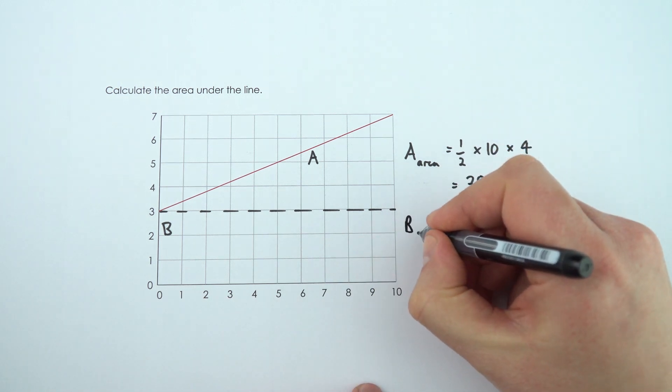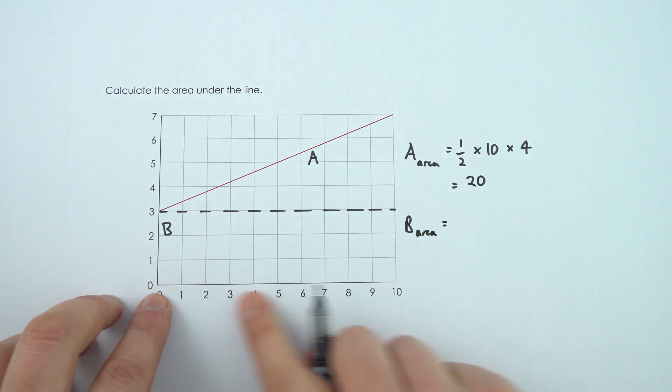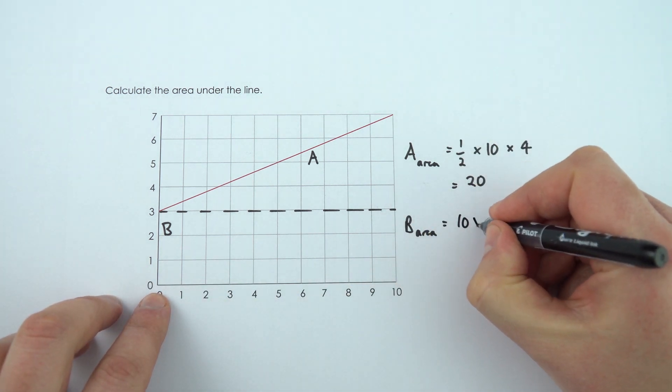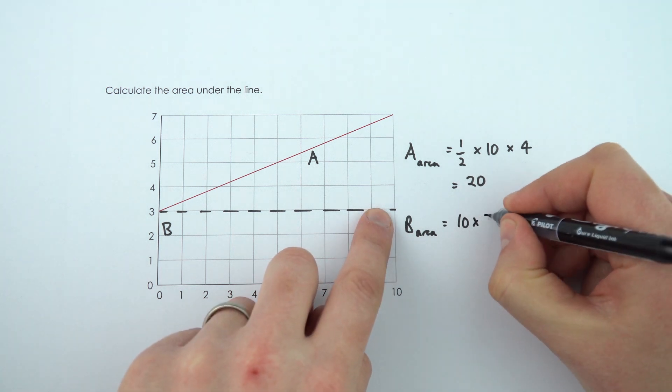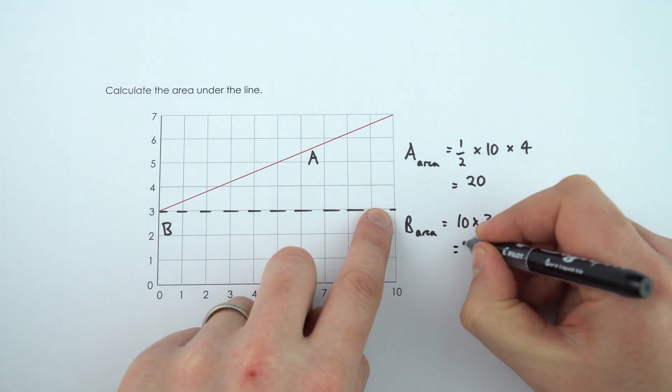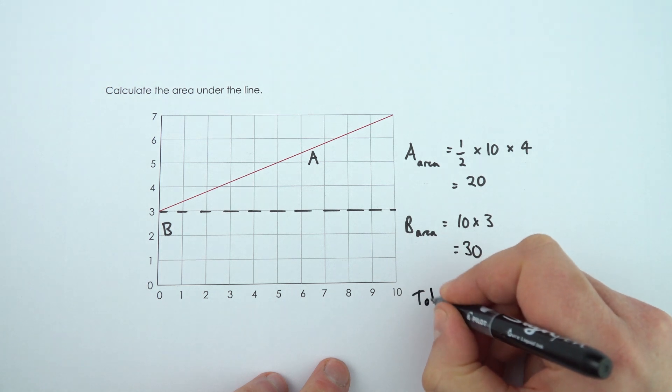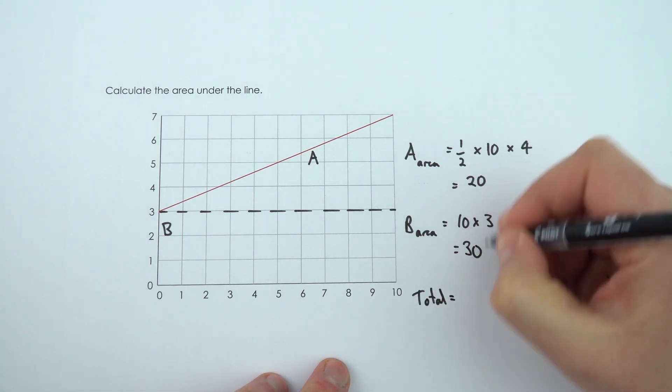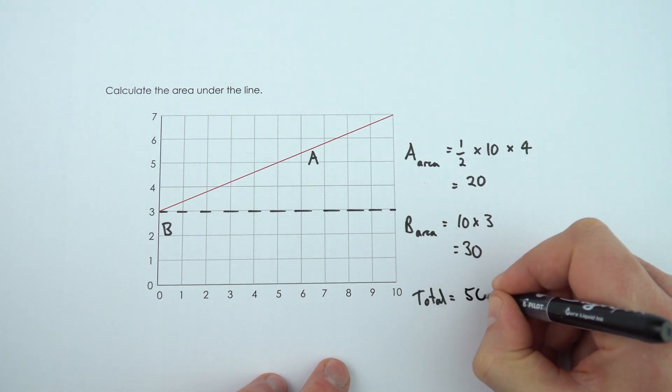The area for B, well this is now a simple rectangle. The base is 10, the height is 3, and that's equal to 30. So the total area for this is going to be equal to 20 plus 30, which equals 50.